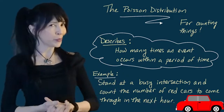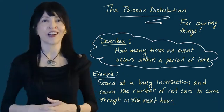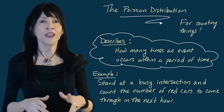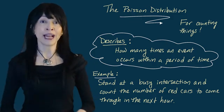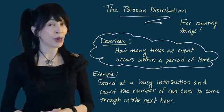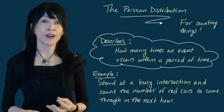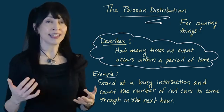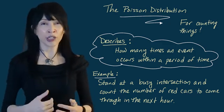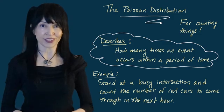Let's assume that's well-defined and there's not a partially red car — we can define a red car. So you stand there for an hour and count the number of red cars to go by. This has no upper bound, and as a counting random variable, there's a very good chance you're going to want to model it with the Poisson distribution.